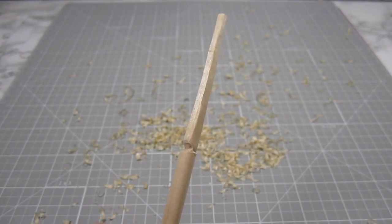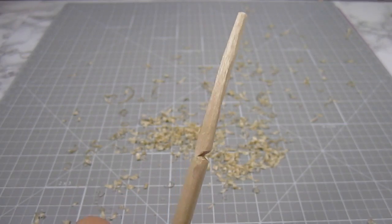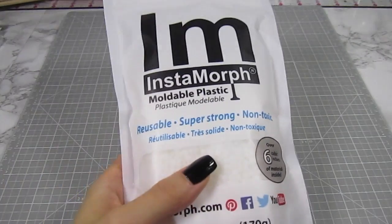Now at this point, you can detach the handle from the dowel but I'm keeping it on so I have more control. For the head, I'm using some moldable plastic.